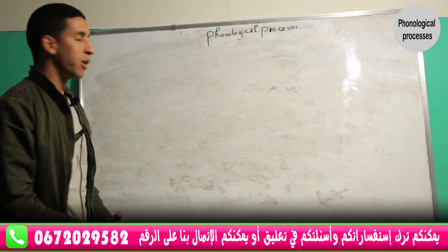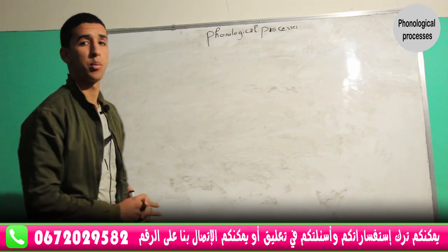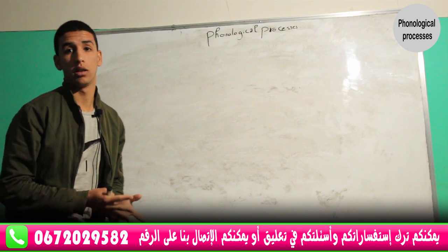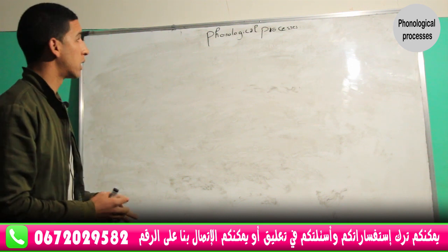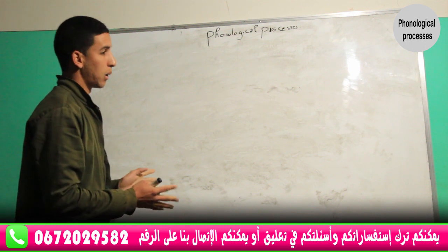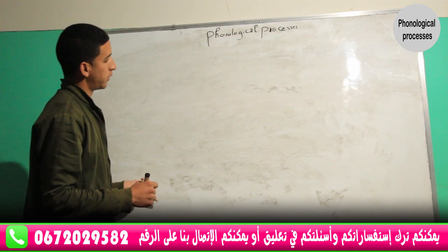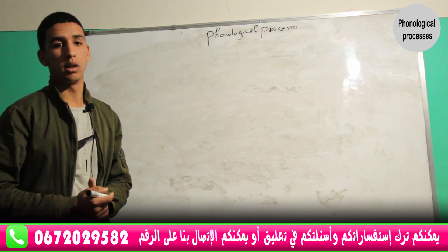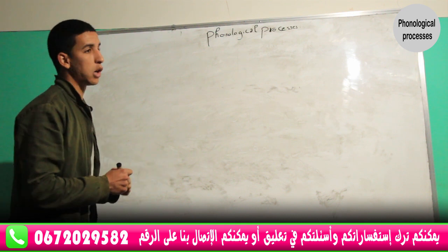Assalamu alaikum. Today we are going to continue what we have started about phonological processes. We talked about vowel harmony in Turkish and rounding harmony. Now we are going to move to another type of vowel assimilative vowel feature: umlaut. By the end of talking about umlaut, we are going to distinguish between the difference between umlaut and vowel harmony. So let's start.